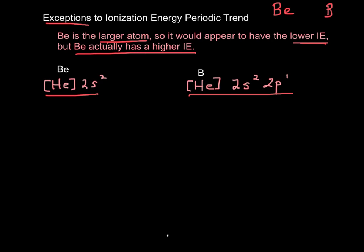When I remove an electron from beryllium to make Be⁺, it becomes [He] 2s¹. I'm going to take one of these electrons away. When I remove an electron to turn boron into B⁺, it's going to take this electron away and become 2s².